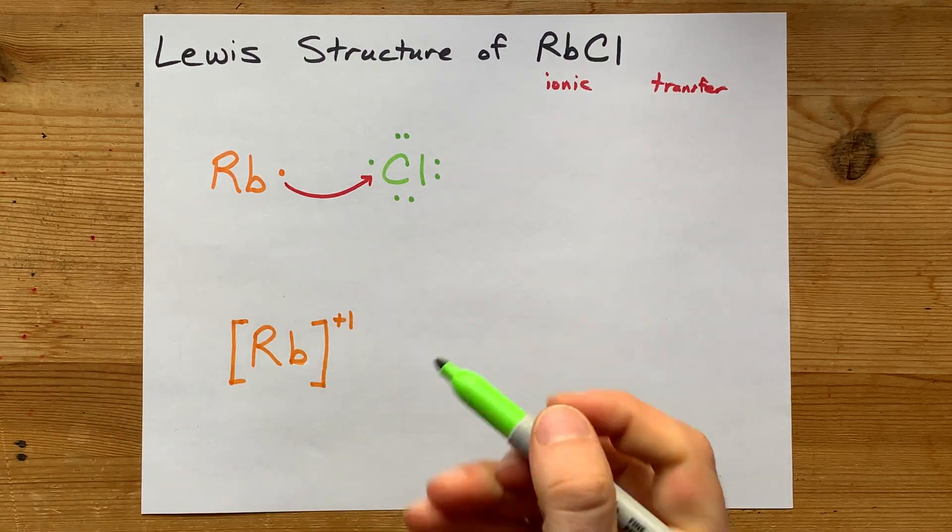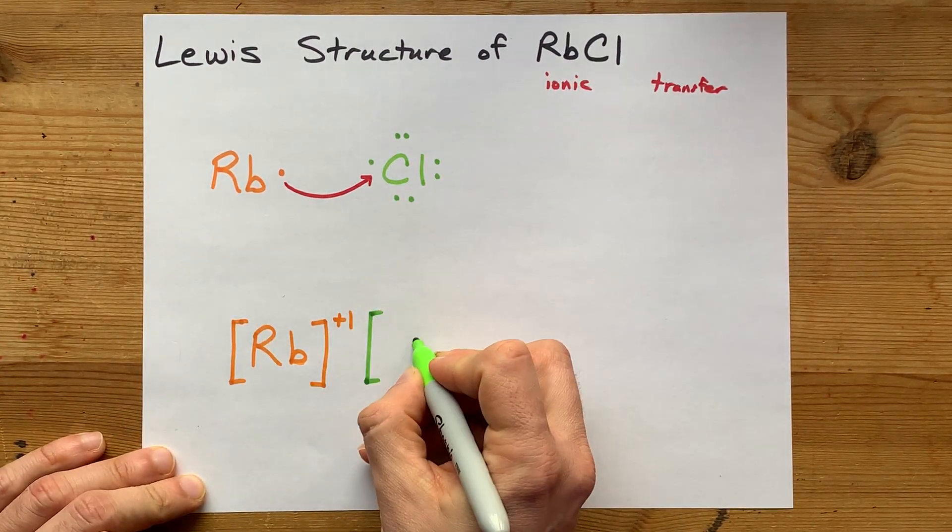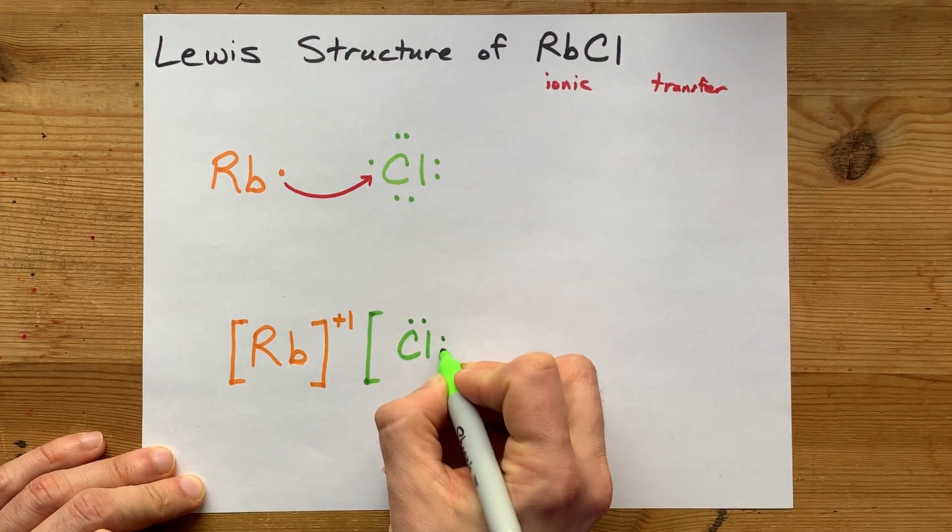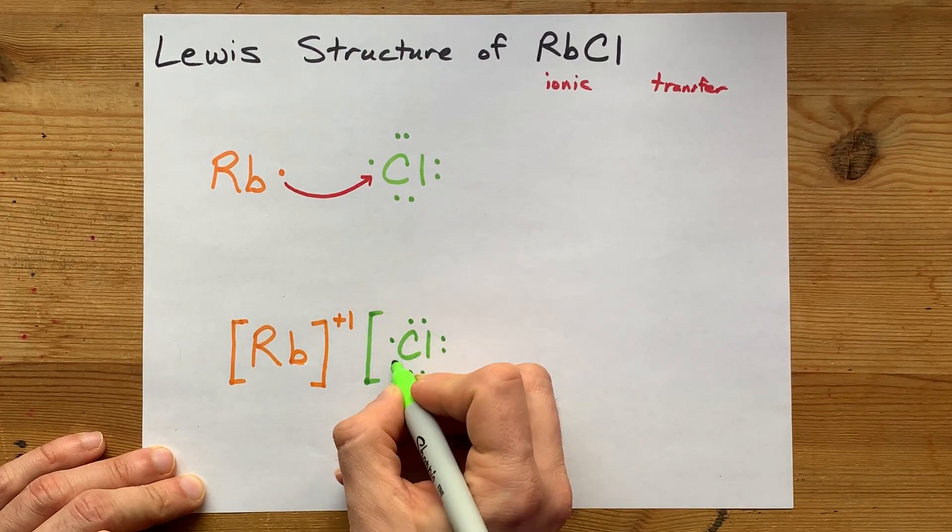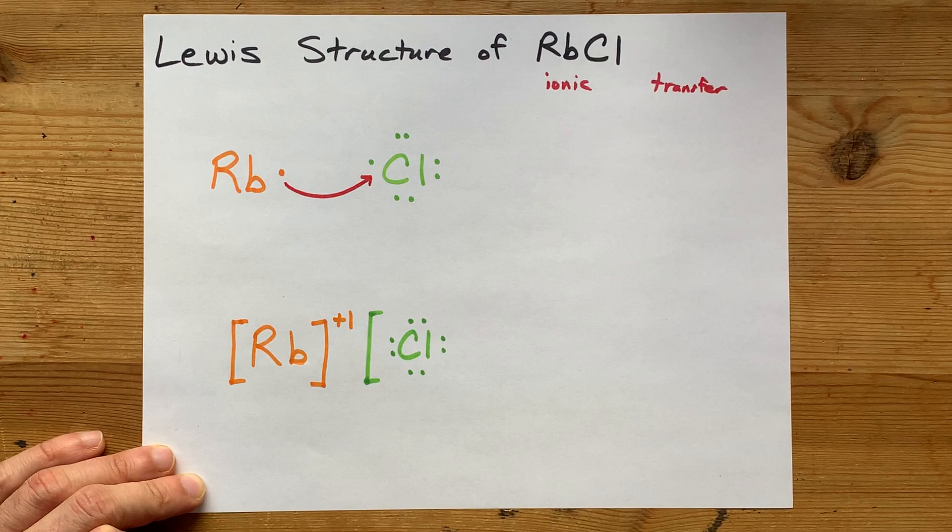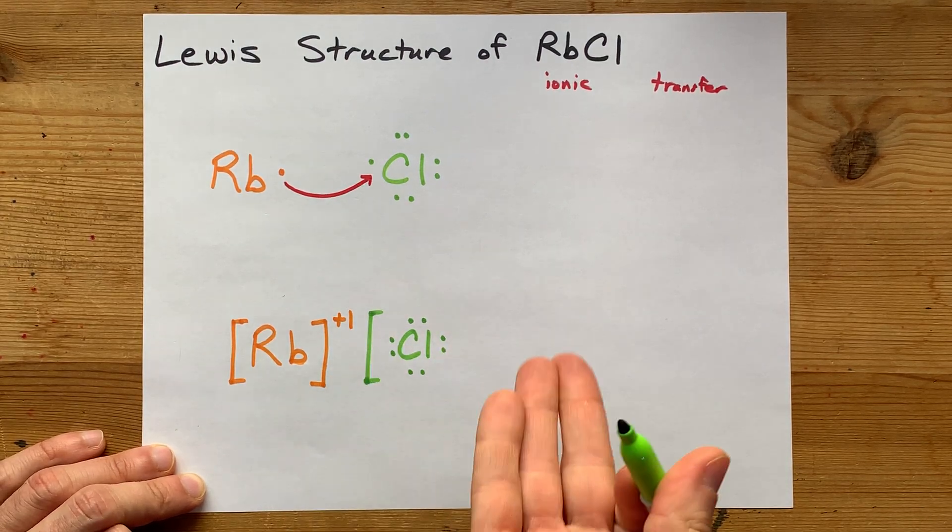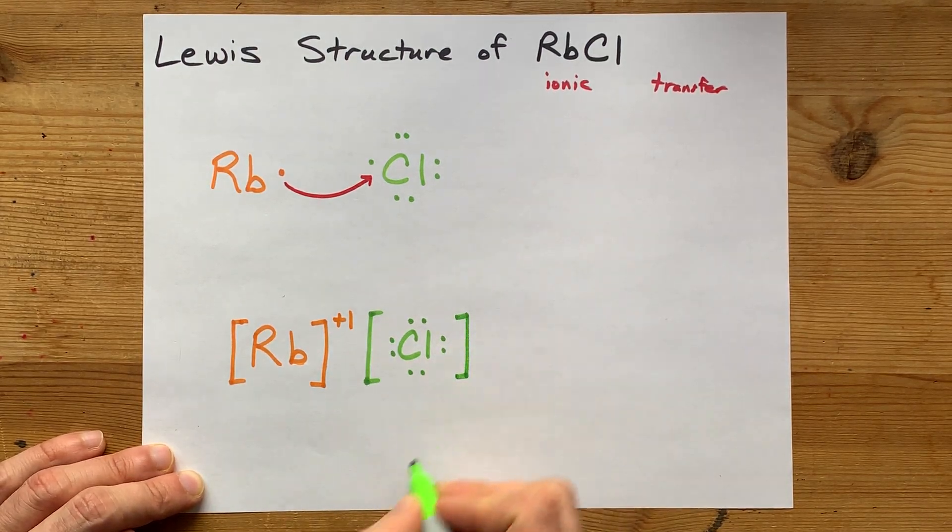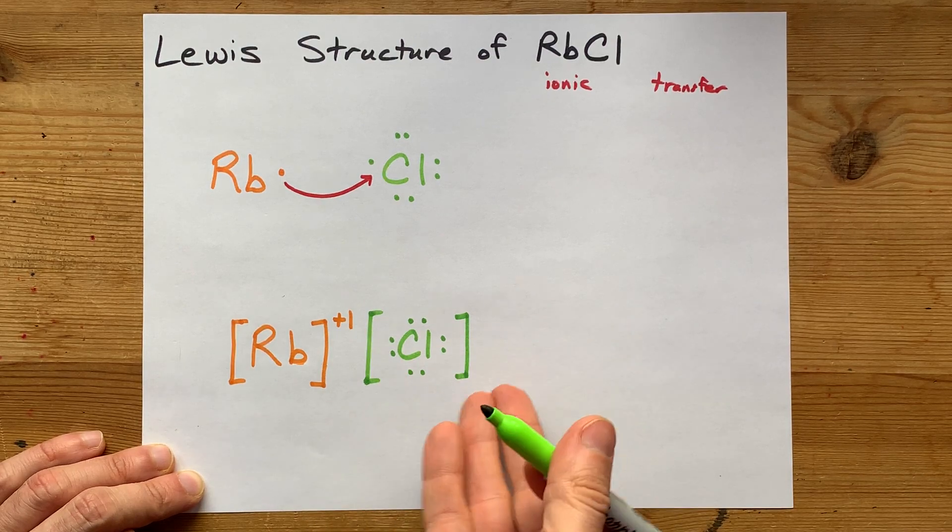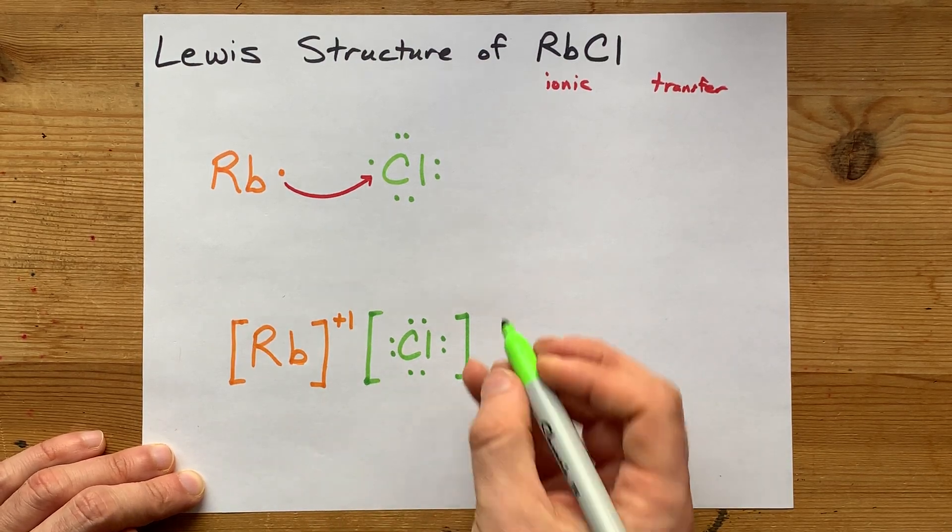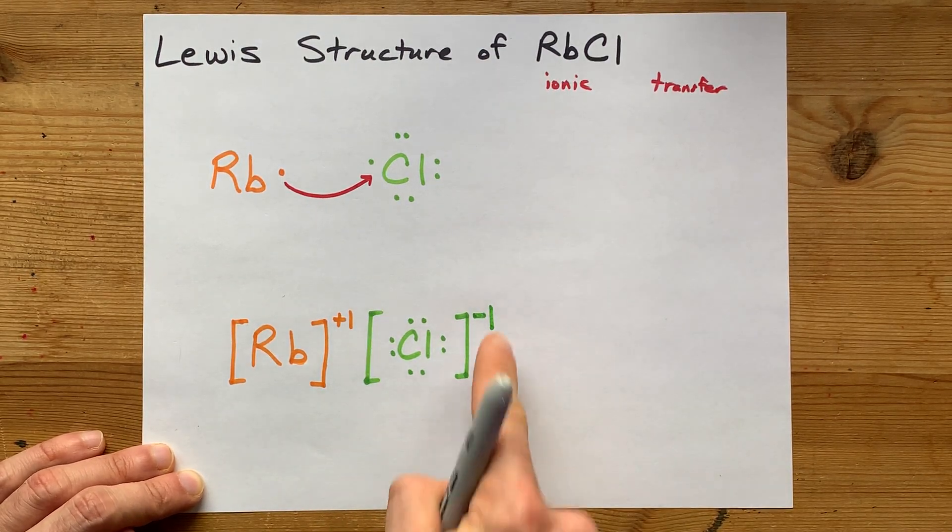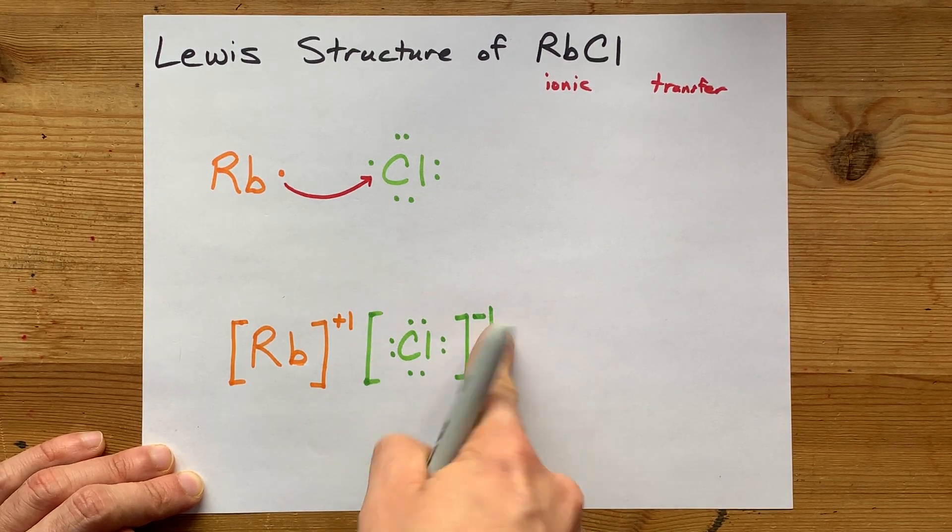In the opposite way, chlorine needs to be drawn with all seven of its original electrons plus rubidium's. Now it has the full octet, eight electrons, square brackets, because it's now a chloride ion with a minus one charge, because it has an extra negative electron.